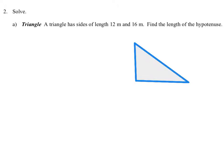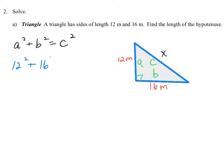Now we'll solve using the Pythagorean theorem. A triangle has sides of length 12 meters and 16 meters, and we want to find the length of the hypotenuse. We use A and B for the legs and C for the hypotenuse. The Pythagorean theorem states A squared plus B squared equals C squared, where C is always the longest side. Since we know A and B but not C, we use a variable X for the unknown. Plugging in: 12 squared plus 16 squared equals X squared, so 144 plus 256 equals X squared, giving 400 equals X squared.